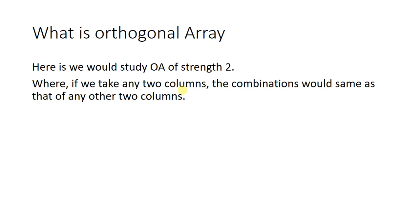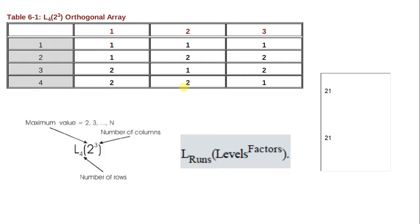If you take the orthogonal array of strength 3, then you need to take three columns and compare the values from those three columns with any other three columns. Here is an example — this is an orthogonal array with three columns, and this is the array of strength 2, so we will compare values from any two columns with any other two columns.